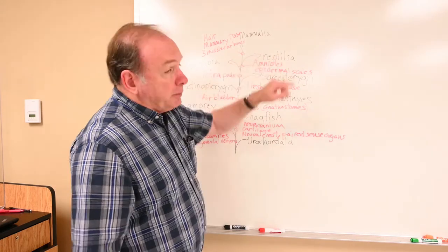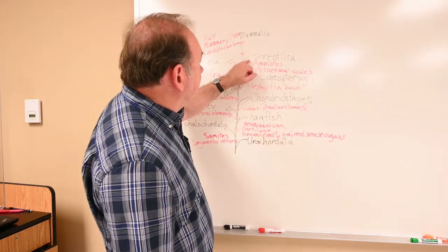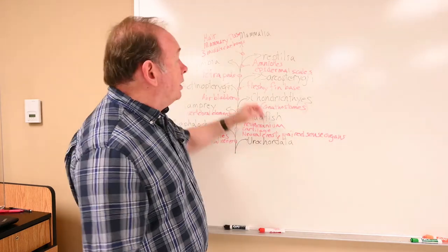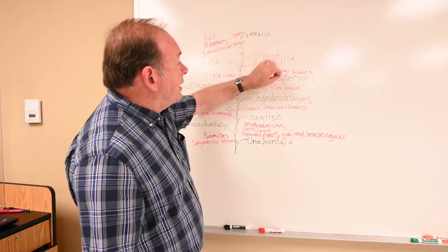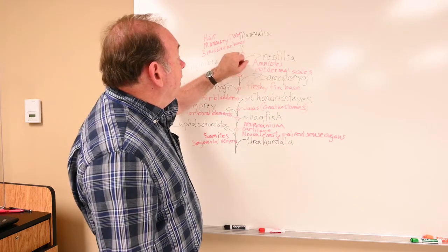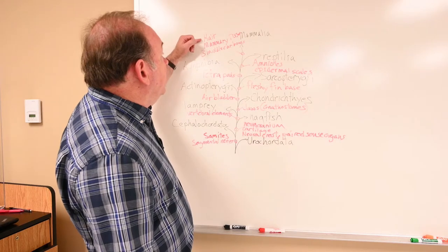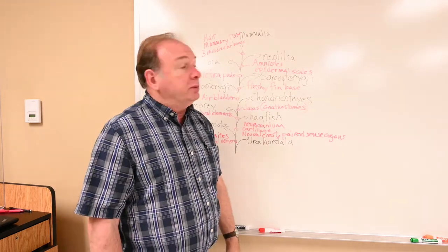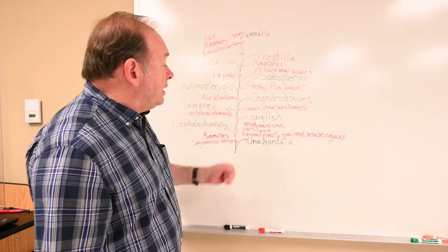In the reptilia we also include birds — birds have feathers, so we just add feathers to our phylogeny chart. These are the first amniotes, the reptiles. And then beyond that we have the mammals, characterized by having hair, mammary tissue, and three middle ear bones. That's a quick review of where we've been with our phylogeny.